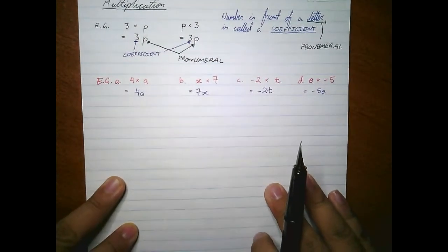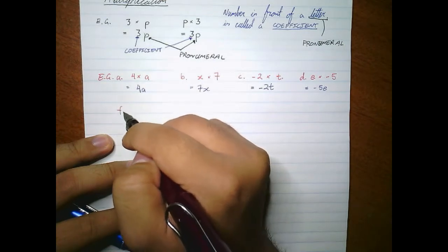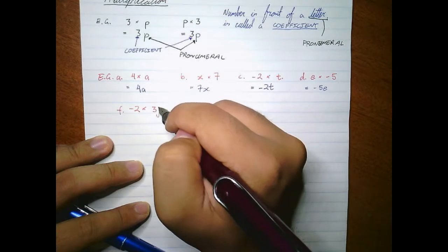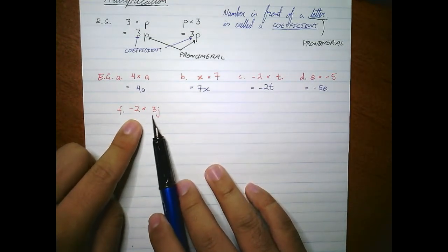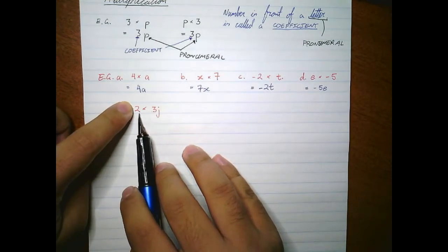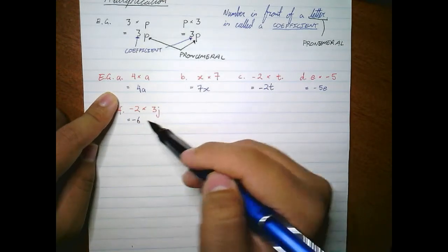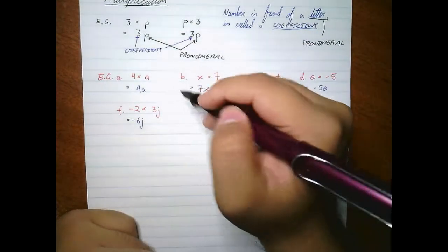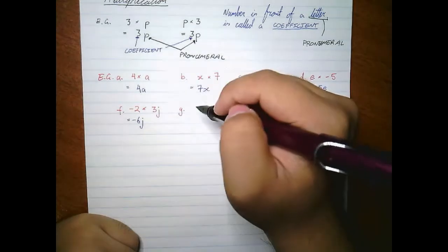Let's move on. If we had something like negative two times 3j, how we answer this is that these numbers interact first. So we focus on the numbers: negative two times three — two times three is six, and a negative times a positive is a negative — giving us negative 6j. The j remains.